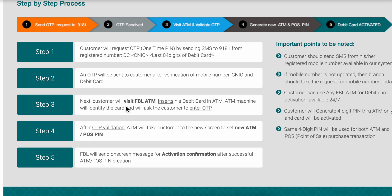Next, visit a Faisal Bank ATM and insert your debit card. The ATM machine will identify the card and ask you to enter the OTP. After entering the OTP, your debit card will be verified and activated.